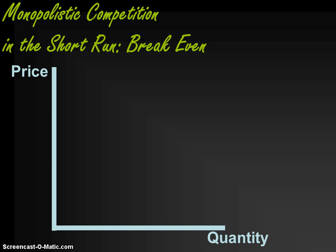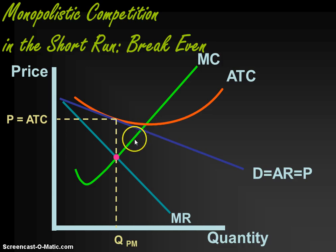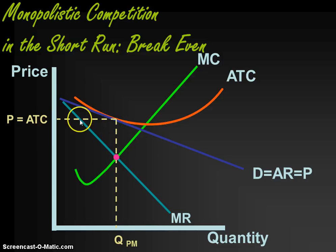Another short-run possibility is for the monopolistic competitor to break even — earn a normal rate of return. This is perfectly acceptable, and it's where they'll end up in the long run due to freedom of entry and exit. In this situation, the average total cost curve is tangent to the demand curve at the profit-maximizing level of output. Note that the producer is not producing at their lowest average total cost — they're not productively efficient — but they are still breaking even, covering all explicit and implicit costs because price equals average total cost at that MR-equals-MC output level.